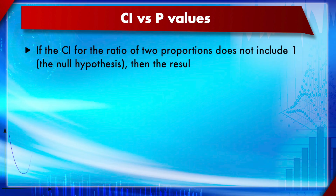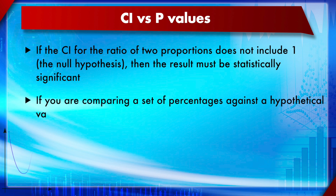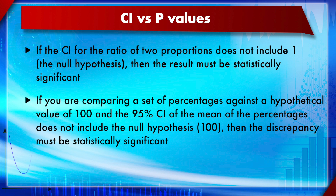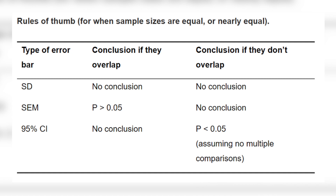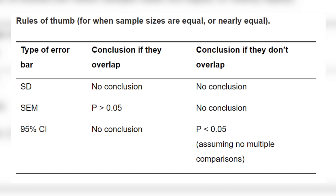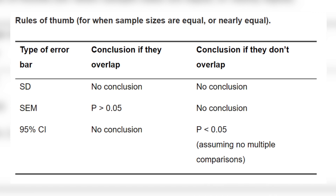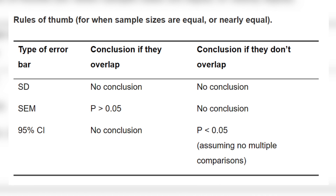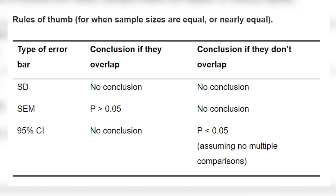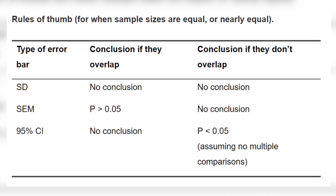Confidence interval versus p-values: if the CI for the ratio of two proportions does not include one — which is the null hypothesis — then the result must be statistically significant. If comparing percentages against a hypothetical value of 100 and the 95% CI does not include 100, the discrepancy must be statistically significant. In a summary table: if two standard deviation error bars overlap, no valid conclusion can be made, because standard deviation plots scatter or variability, not precision of measurement.